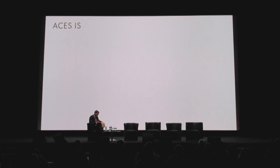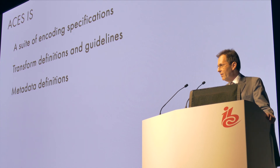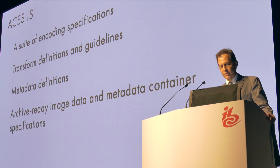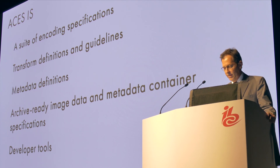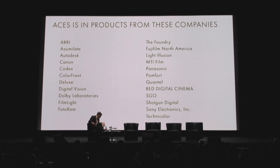Let's come back to what ACES is specifically. It's a suite of encoding specifications — how you encode the zeros and ones that make up the pixels on the screen. It's a set of transform definitions and guidelines for how you bring your imagery into the system and send it back out. It includes metadata definitions, because as we saw in the film system, you do need metadata definitions. It's an archive-ready image data and metadata container specification — actually more than one. It's a set of developer tools to enable product and pipeline designers to integrate these technologies into their products and services. And it's a set of standards, already standardized by SMPTE and soon by ISO.